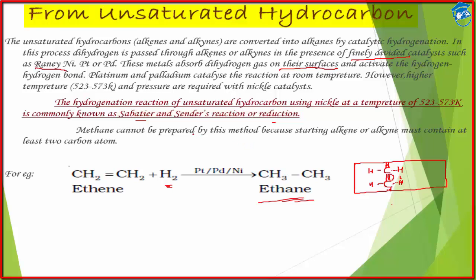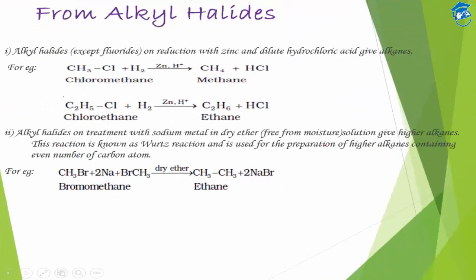This method is also used in the hydrogenation of vegetable oil, where unsaturation is reduced so that the oil becomes edible and palatable. A higher number of double bonds is not good for health, which is why the number of unsaturations is reduced. This is why refined vegetable oils are more expensive — cheaper ones retain more unsaturation.